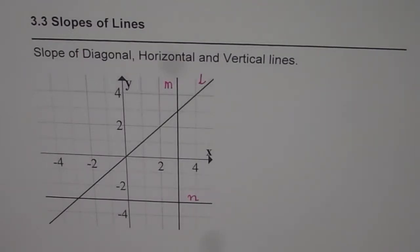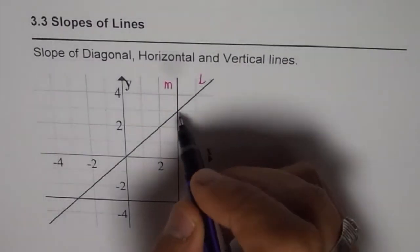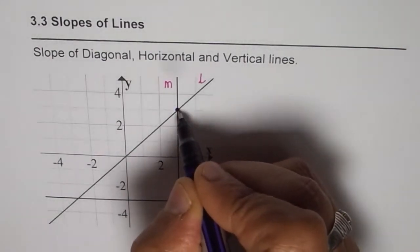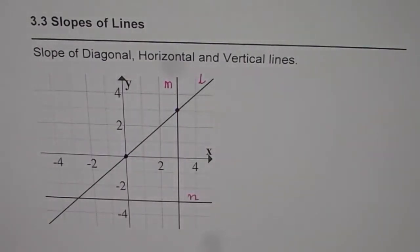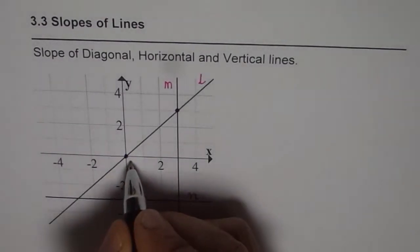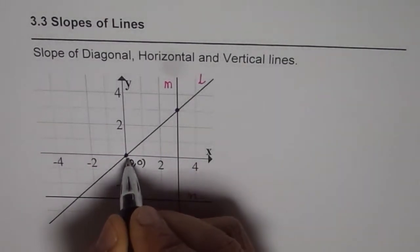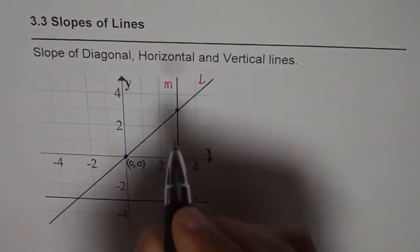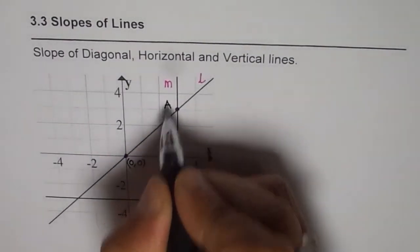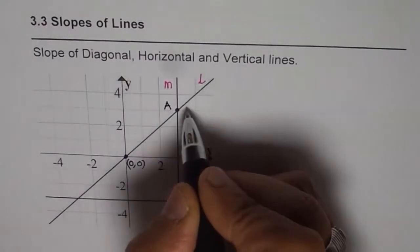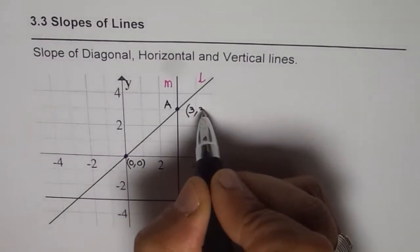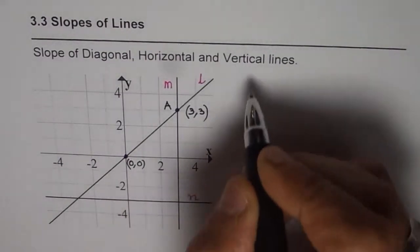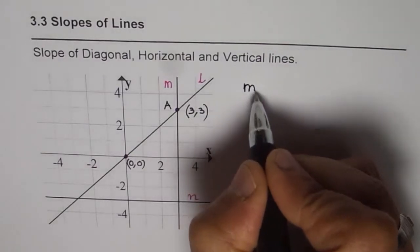So let's see how to find the slope. Let's pick up some points and start with the diagonal line L. I am taking this point and the origin. The origin is always a good point to take — origin means (0, 0), so both x and y values are 0. Let me call the other point A, and its coordinates are x = 3 and y = 3.